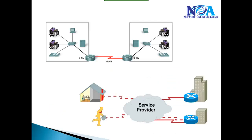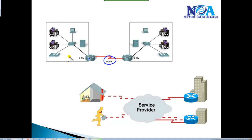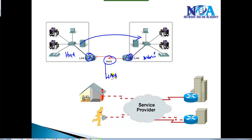Getting back to the basics of WAN — WAN is something provided by the service provider. For example, if I have a branch office in Hyderabad and a branch office in Dubai and I want these two locations to communicate, we connect a router and then we need a WAN connection. This WAN connection is provided by the service provider, and there are different types of technologies used for providing WAN connections.